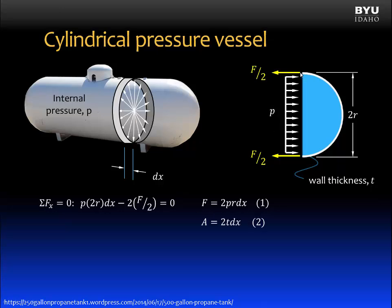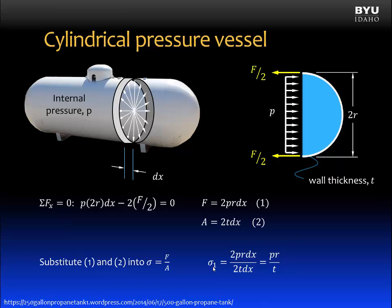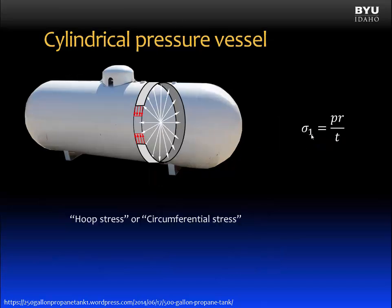Substituting Equations 1 and 2 into the expression for normal stress — force divided by area — we get that normal stress σ₁ = pr/t, where p is the internal pressure, r is the radius, and t is the wall thickness. The radius is the internal radius of the cylinder. We call this stress σ₁, and it is called the hoop stress or the circumferential stress.